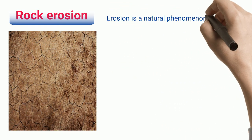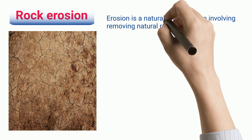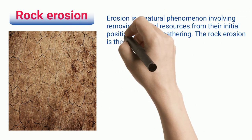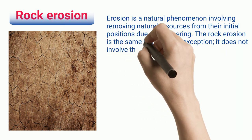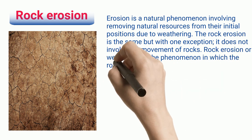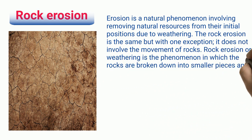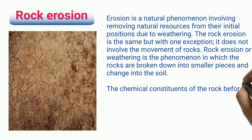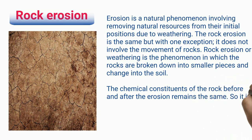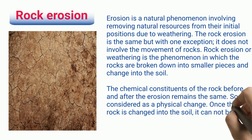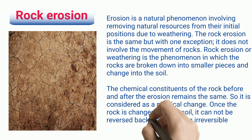Rock erosion. Erosion is a natural phenomenon involving removing natural resources from their initial positions due to weathering. Rock erosion involves rocks being broken down into smaller pieces and changing into soil. The chemical constituents of the rock before and after the erosion remain the same, so it is considered a physical change. Once the rock is changed into soil, it cannot be reversed — hence it is an irreversible physical change.